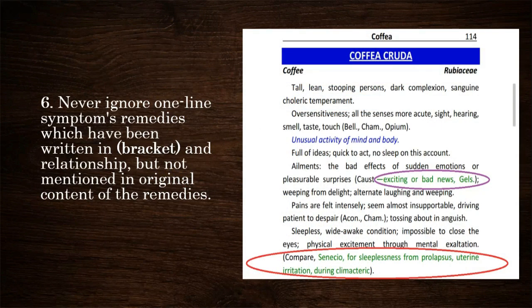Six, never ignore one-line symptom remedies which have been written in brackets and relationships but not mentioned in the original content of the remedies — such as in Coffea Cruda, exciting or bad news in Gelsemium, and one rare remedy with their indication, Sinecio, at the bottom of the remedy.